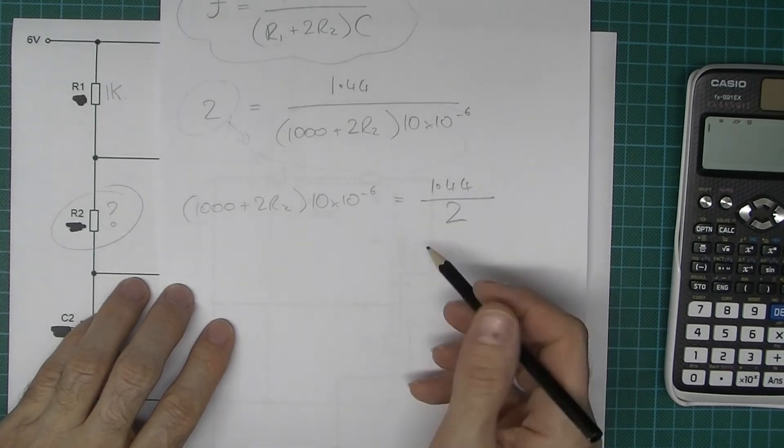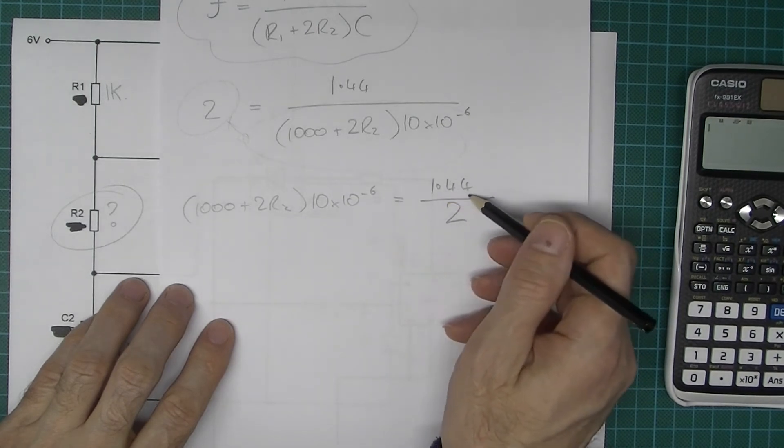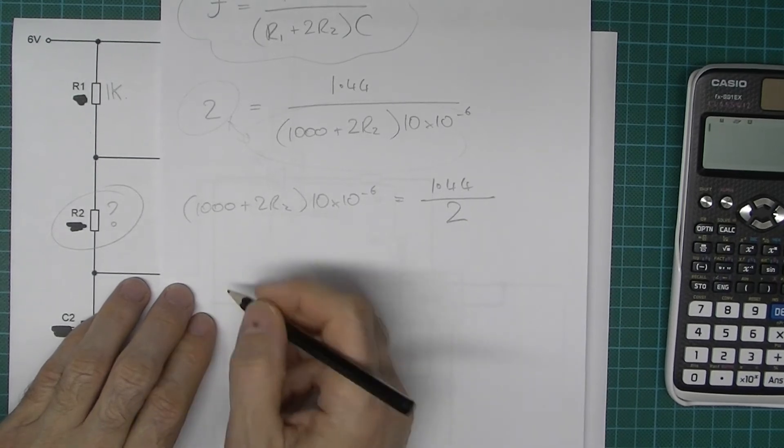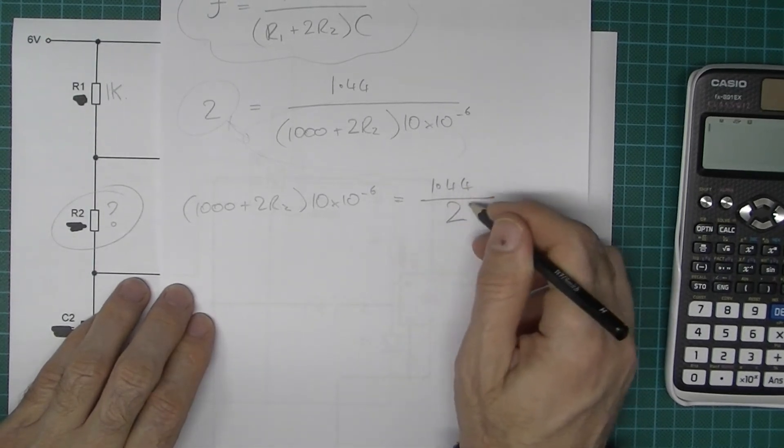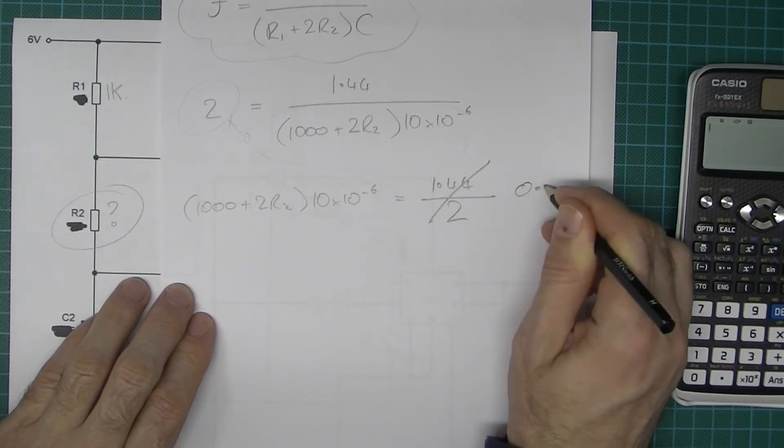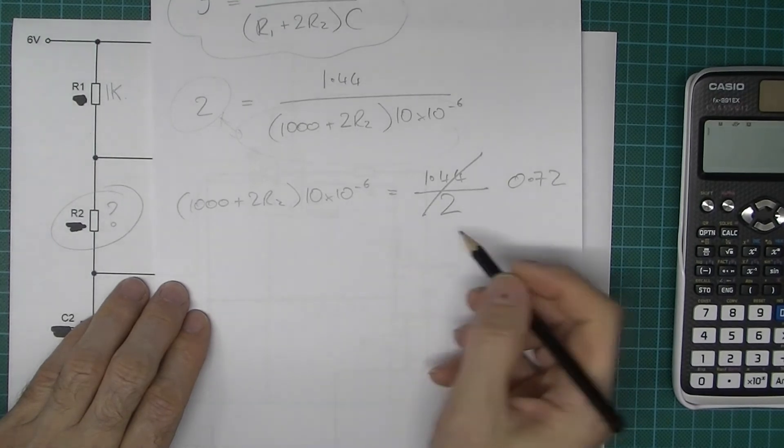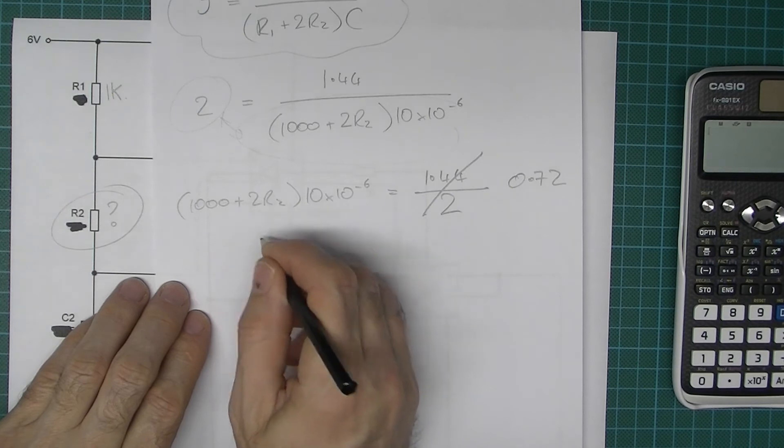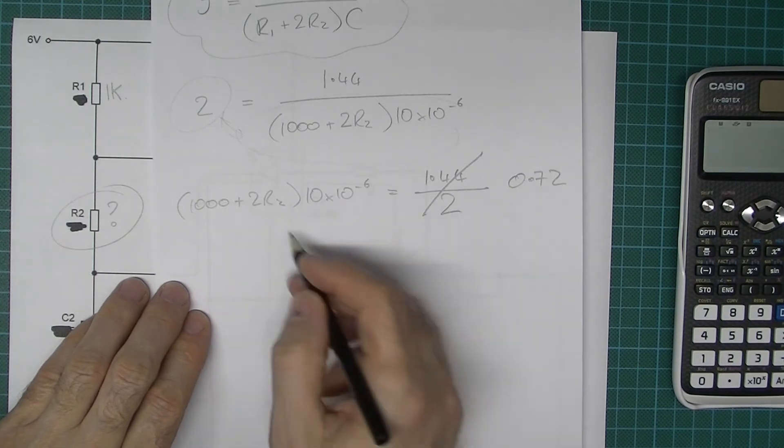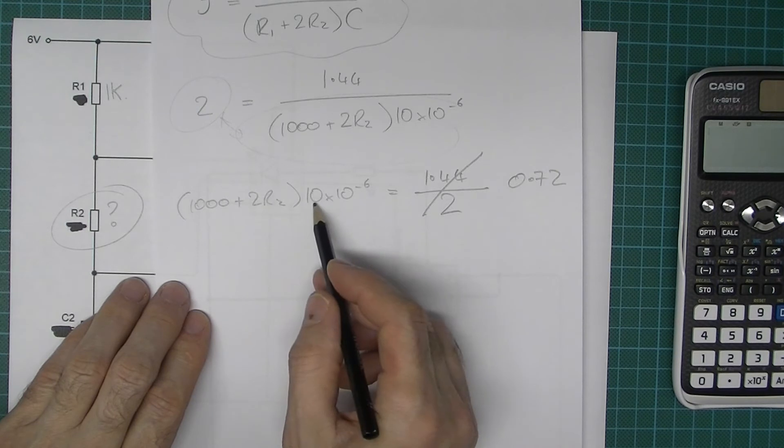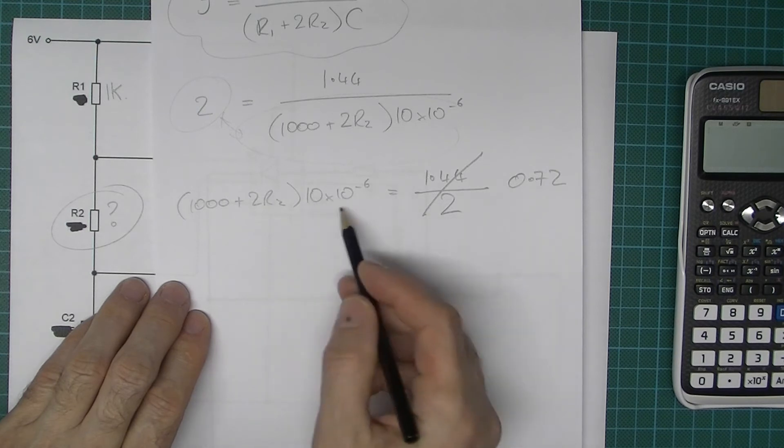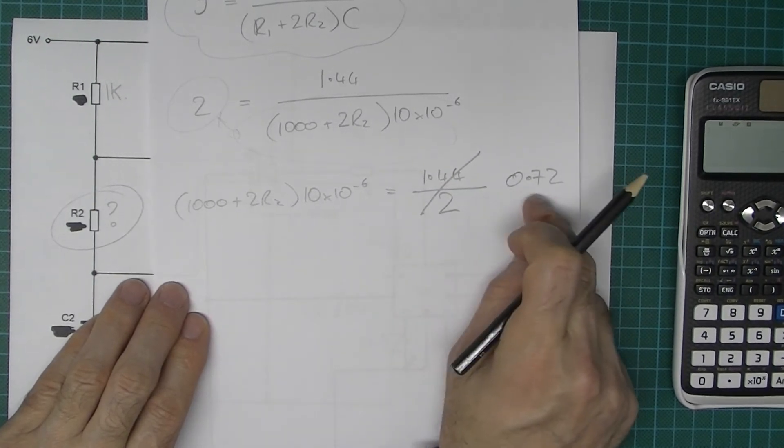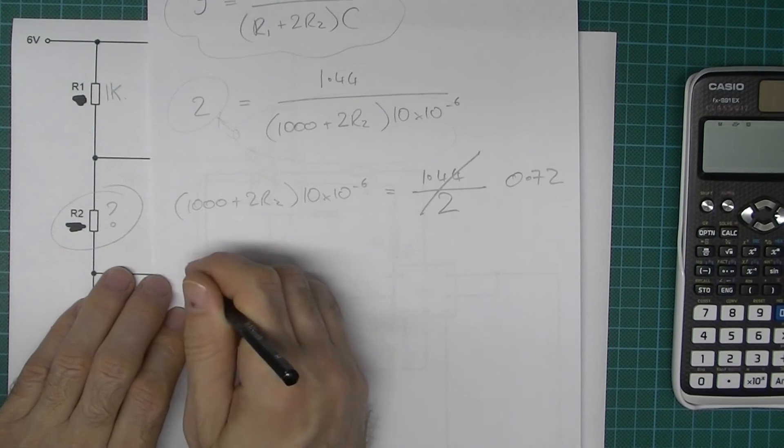Okay, now we could simplify this down because we could easily divide 1.44 divided by 2 which will be 0.72, so let's just get rid of that, 0.72. Now what I want to do, I want to ultimately, as I said earlier, I just want to have R2 here so I need to get rid of anything I can. So I can get rid of this 10 times 10 to the minus 6 by dividing this side by 10 times 10 to the minus 6, but I'll also have to divide 0.72 by 10 times 10 to the minus 6. So let's do that.